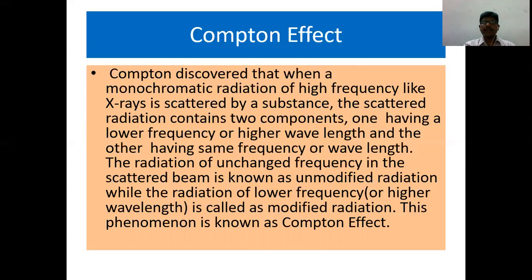The radiation of unchanged frequency in the scattered beam is known as unmodified radiation. But the radiation of a lower frequency or higher wavelength is called as modified radiation. This phenomenon is known as Compton effect. So we are going to understand what is this modified component and what is this unmodified component in Compton effect.